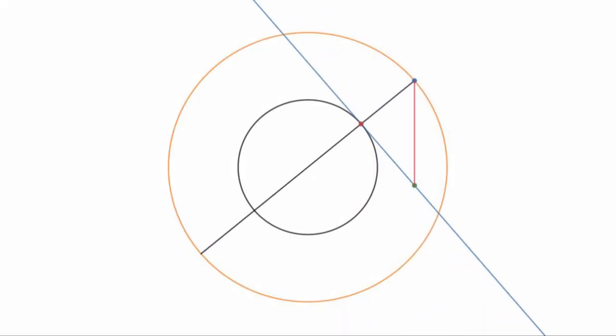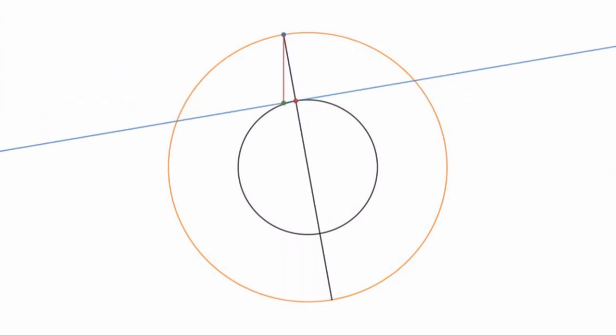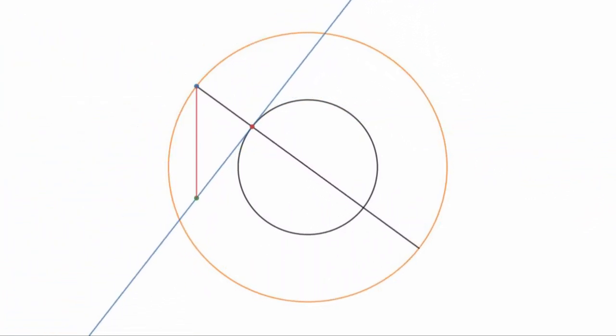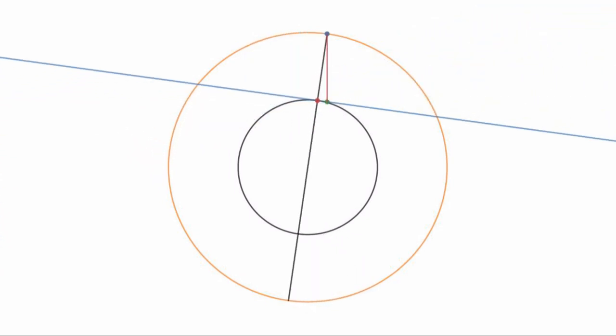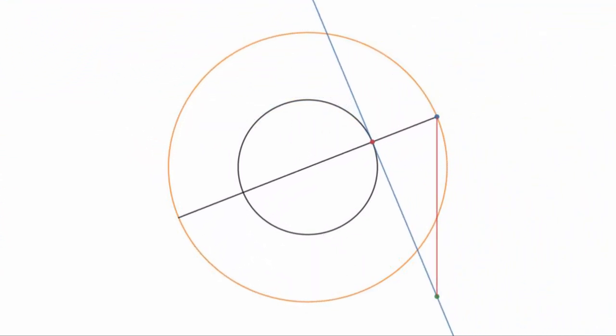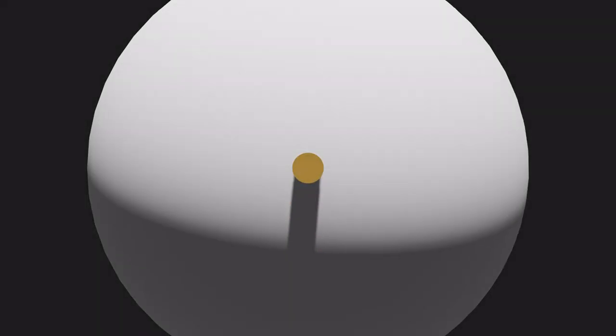Now this is great, but only solves our problem two-dimensionally and doesn't take into account our latitude of 37 degrees. To do this, we can represent our two-dimensional shadow length as a function of H and theta, Fs H theta. Next, we can represent our shadow as a two-dimensional vector, vector S, with S0 equal to Fs of H and theta.